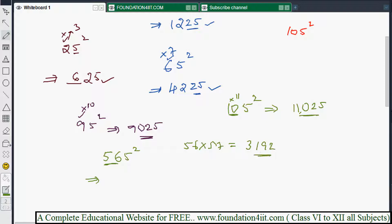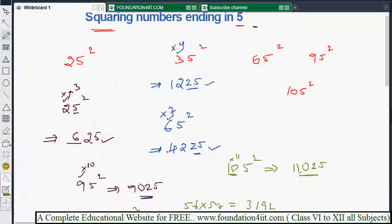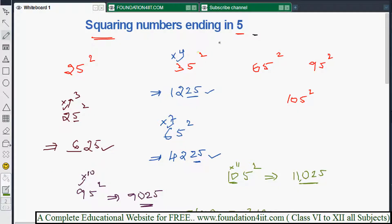Now 3192 and 5 square, last is 5 right? So 25 need to attach. That means 319,225 is the answer, 565 whole square. This way we can do the numbers, squaring the numbers ending in 5.